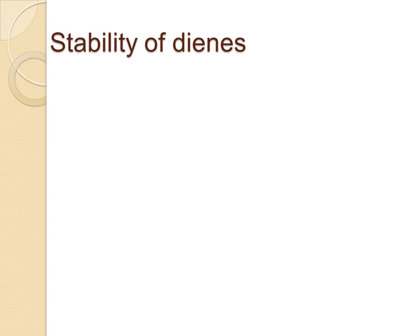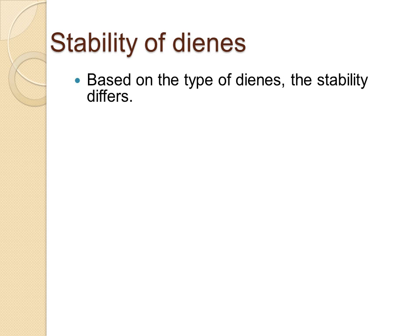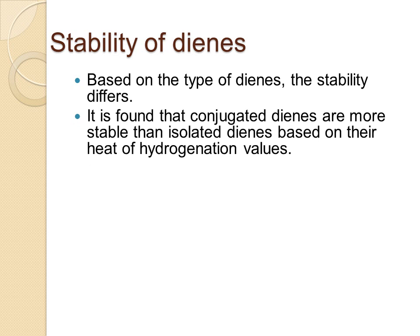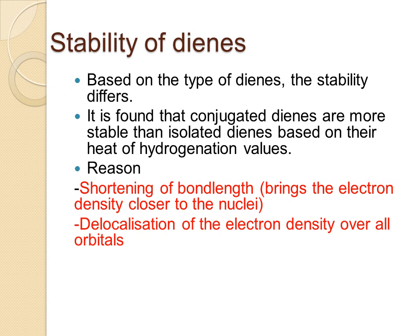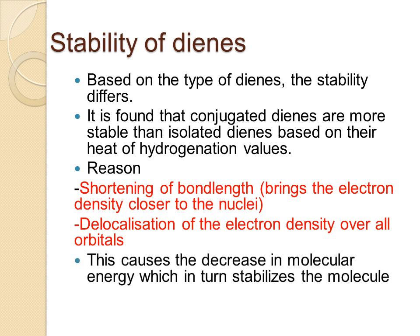Now let us see about the stability of dienes. Based on the type of diene, stability differs. Conjugated dienes are more stable than isolated or cumulated dienes, as proved by their heat of hydrogenation values. Conjugated dienes have a shortened bond length, which brings the electron density closer to the nuclei, and delocalization of electron density over all the orbitals. These two factors decrease molecular energy, which in turn stabilizes the molecule.